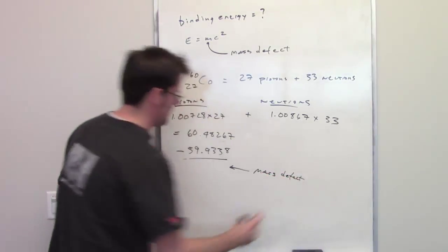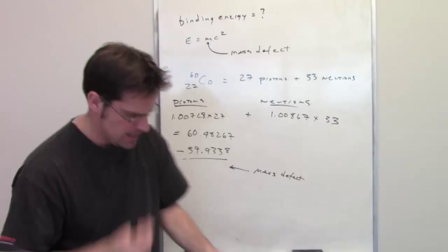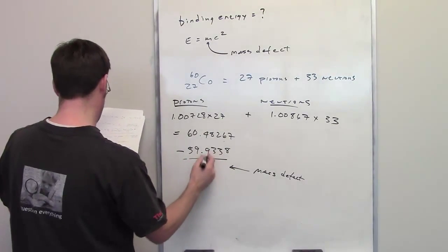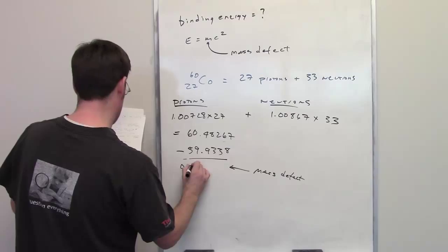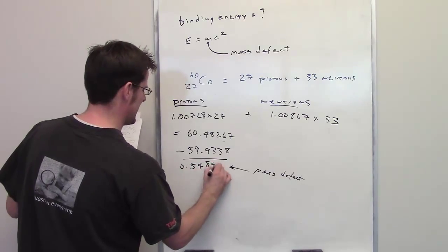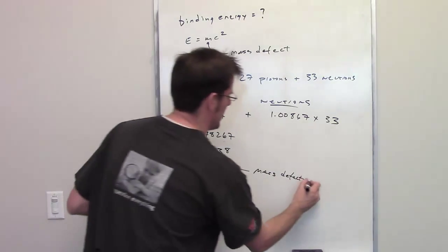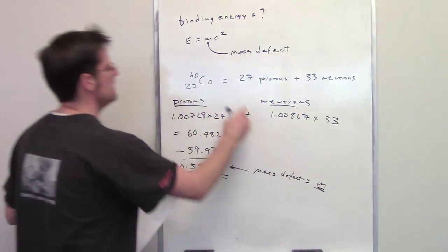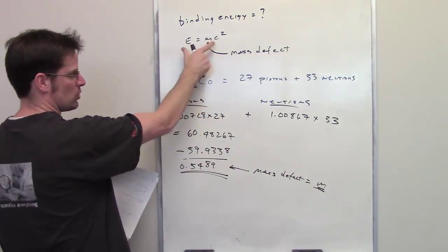Mass defect. I threw that in my calculator, and I got a difference between these two of 0.5489. So that's my mass defect, or in this case, that's going to be m in my E equals mc squared equation up here.